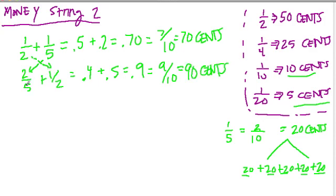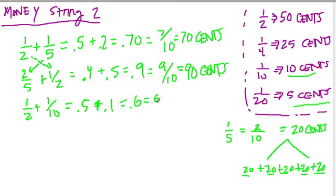Moving on in the string: one half plus one tenth. This is not a hard problem, and it's easy to see the answer using coins. A half is 0.5 and one tenth is a dime, or 0.1. That gives 0.6, or six out of ten, or sixty cents. Here we introduce the dime, and look at all the different representations we automatically connected.